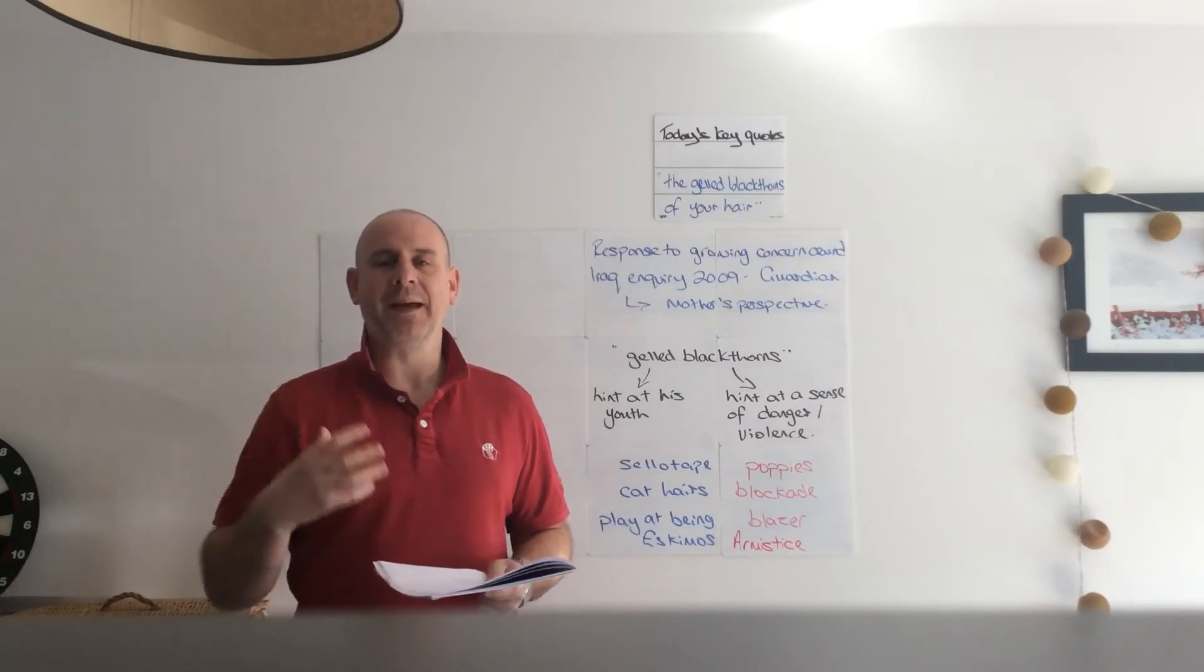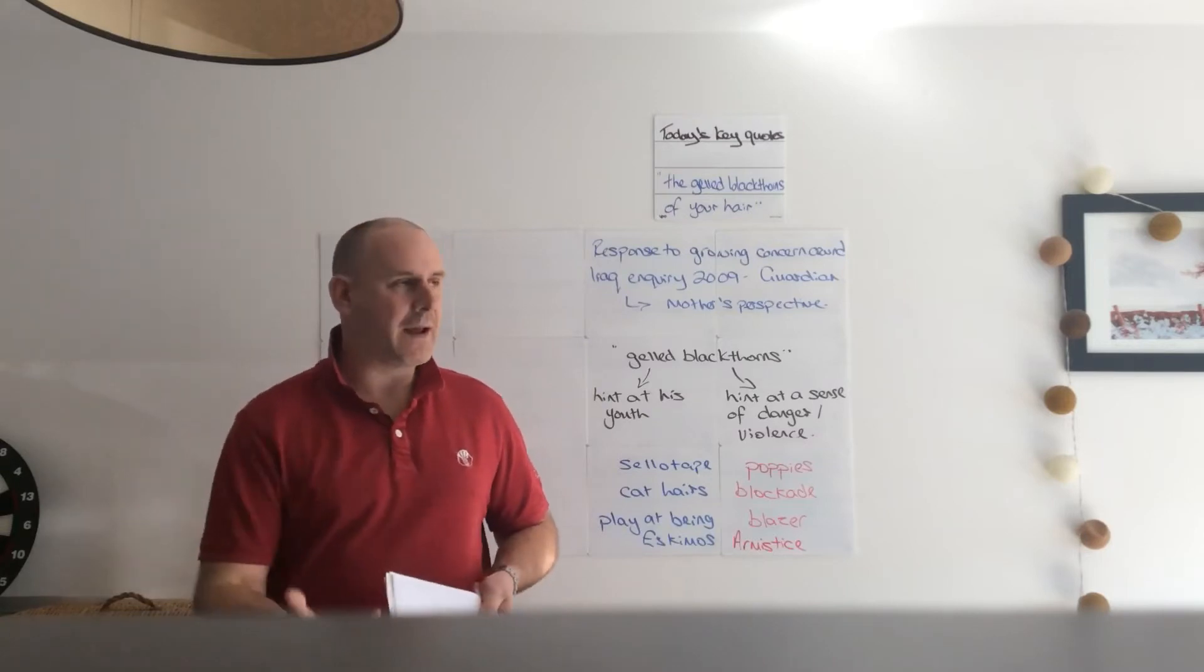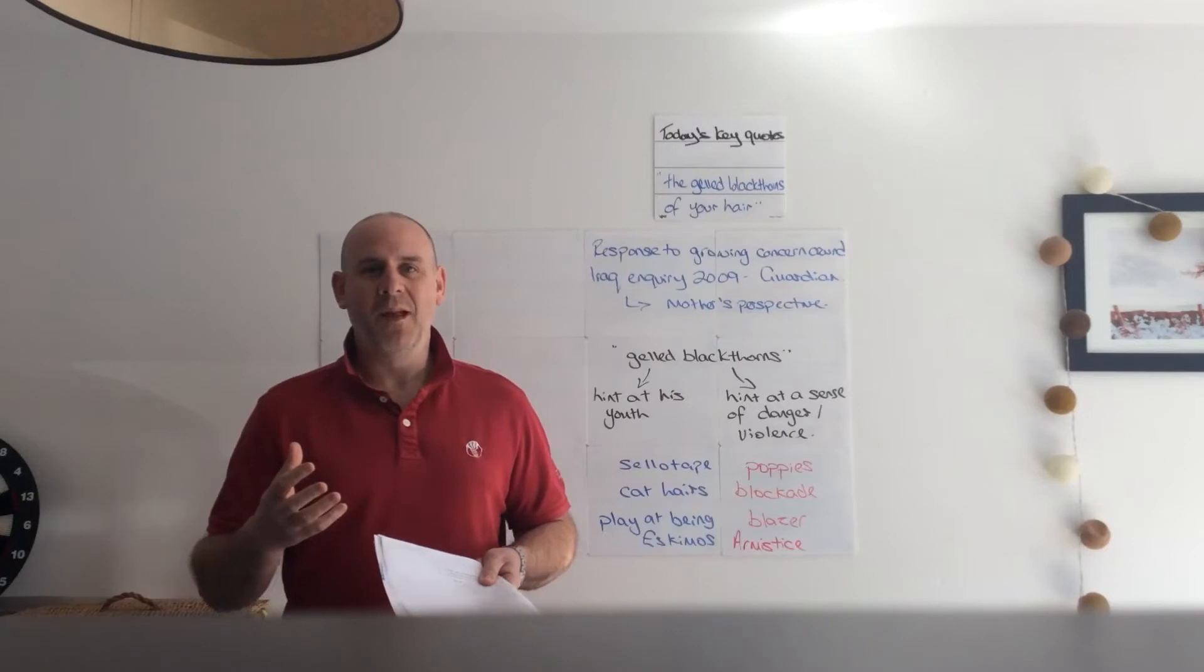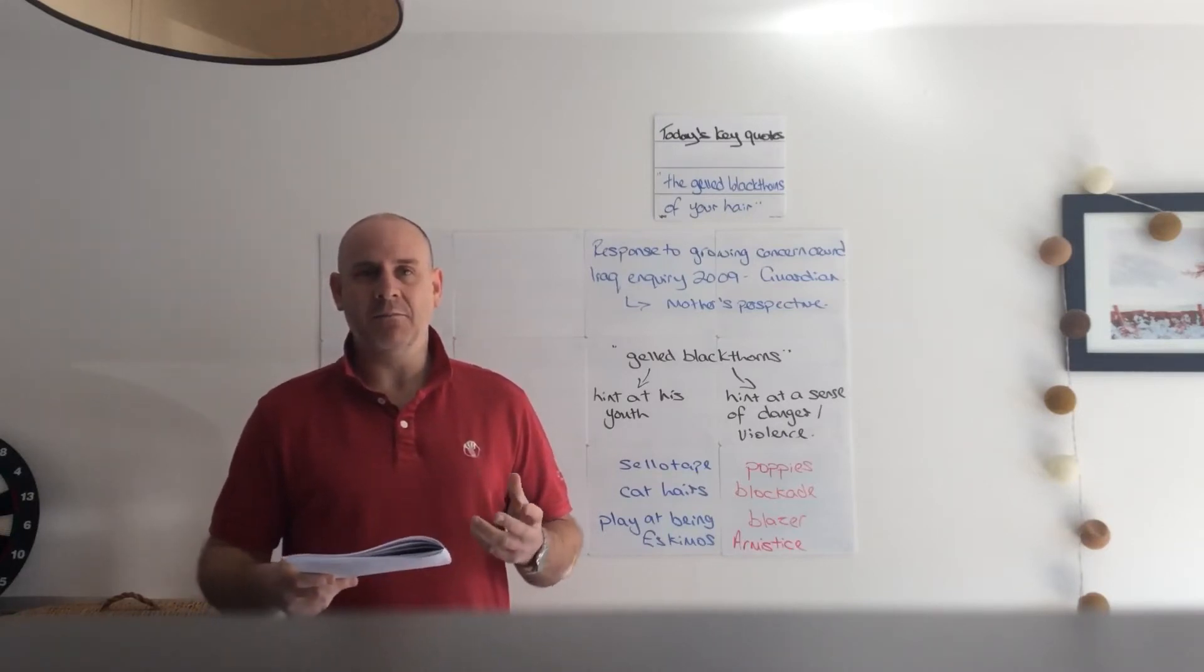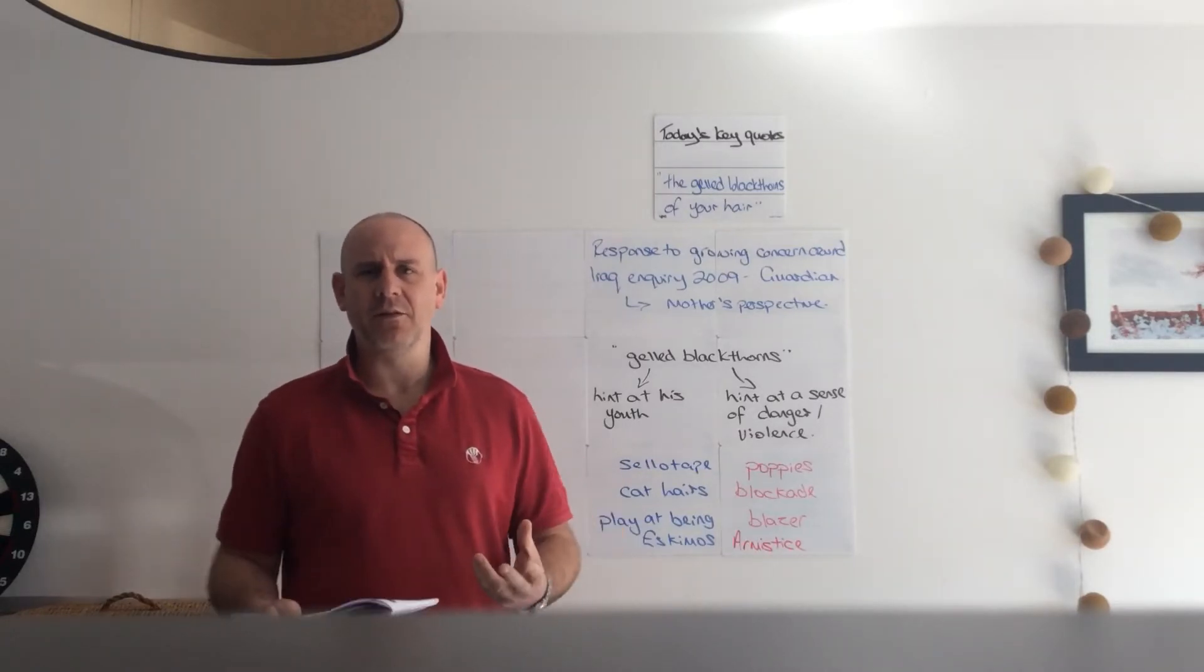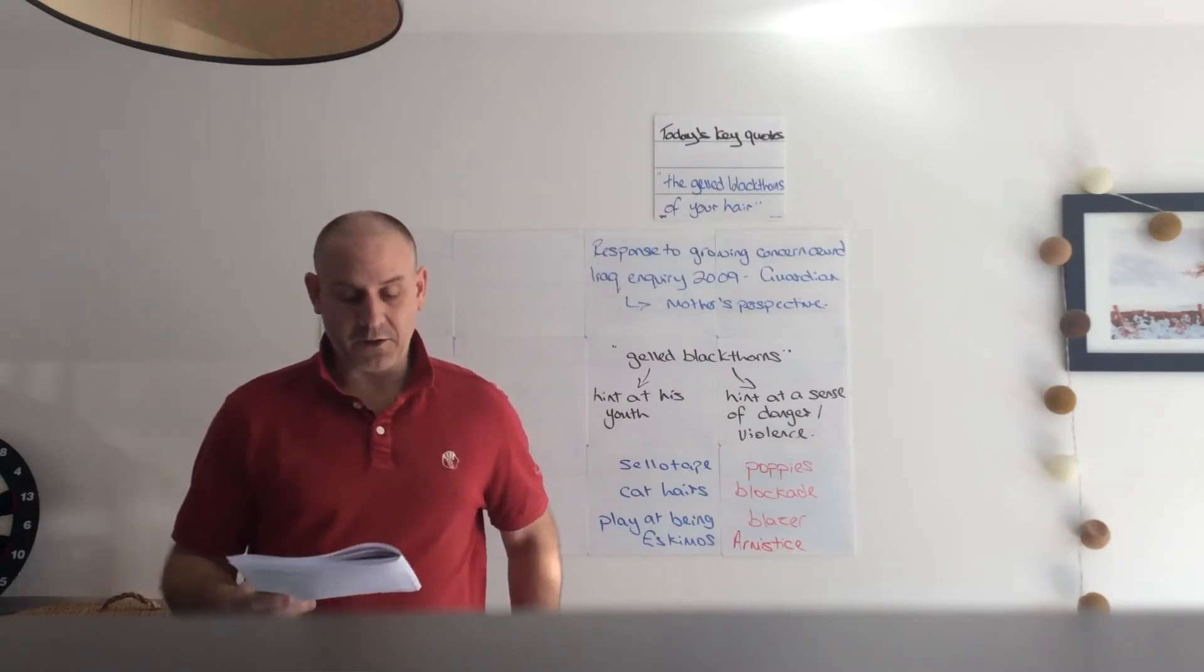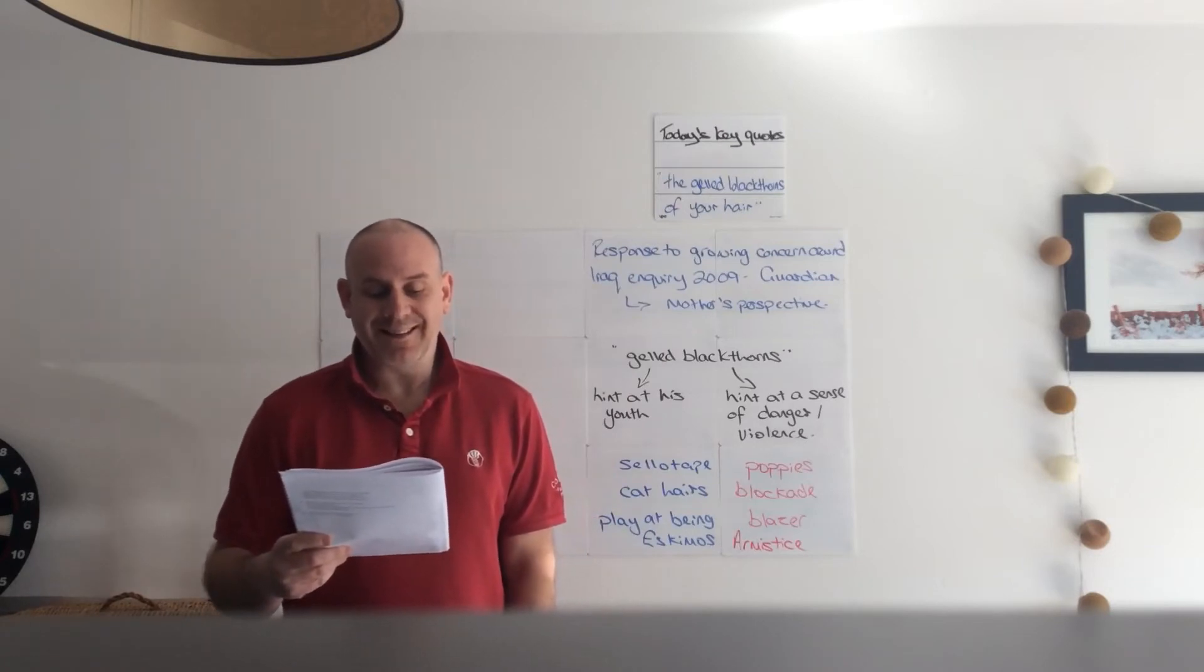In the first stanza, what we need to look out for is the sense of the developing relationship between the mother and the child, how Jane Weir has established that really close connection between the son and the mother, in both the pride of him going off to war but also a very deep personal connection built up obviously through the love of the two of them through his childhood.